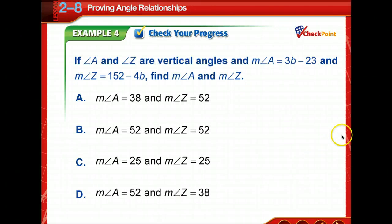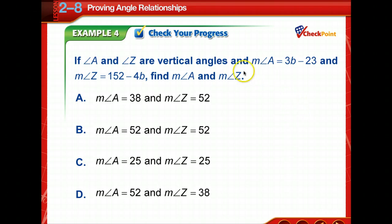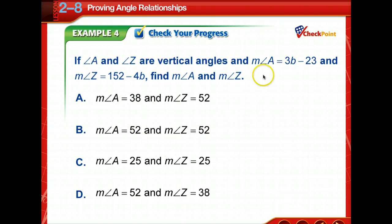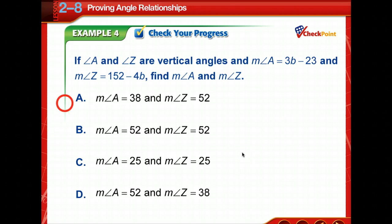Time to check your progress — pause and work the problem. They're vertical angles, so set 3b minus 23 equal to 142 minus 4b. That gives 7b equals 165... wait — 7b equals 175, so b equals 25. Substituting back: 3 times 25 minus 23 and 152 minus 4 times 25 both equal 52.